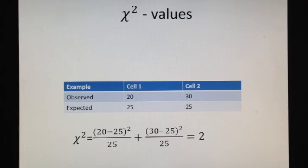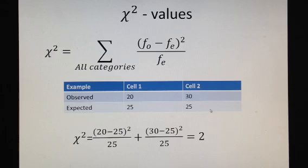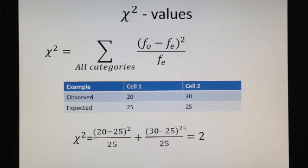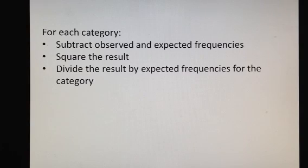The chi-square value uses a long and tedious formula. To illustrate, imagine only two cells: we are tossing a coin 50 times, with observed values of 20 in cell 1 and 30 in cell 2, and expected values of 25 and 25. Chi-square is the difference of frequency in cell 1 squared divided by the expected frequency of 25, plus the same for cell 2: (30−25)² divided by 25. For each category, subtract observed and expected frequencies, square the result, divide by the expected frequency, and then add all these categorical terms.